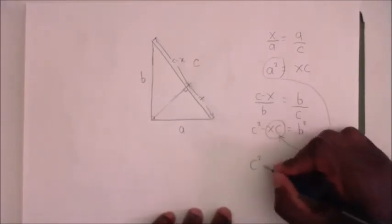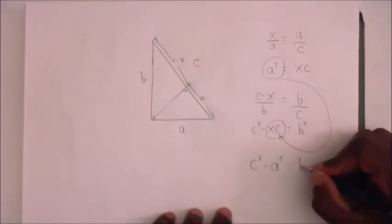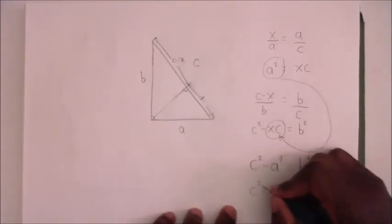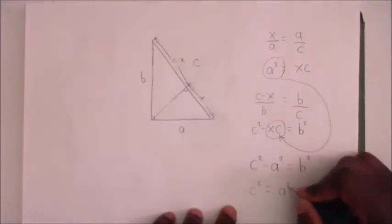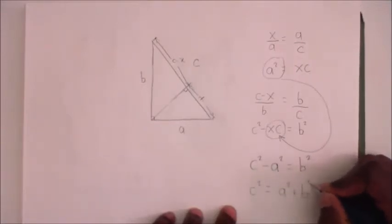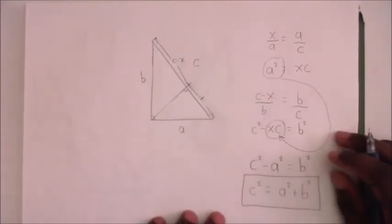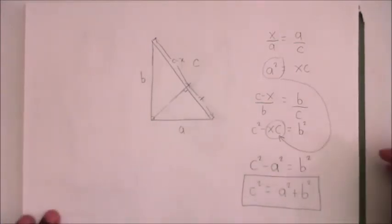And we get C squared minus A squared is equal to B squared, or to paraphrase it, C squared is equal to A squared plus B squared. And what we have just done is derived the Pythagorean theorem, and I hope you enjoyed this and I'd like to thank you very much for watching.